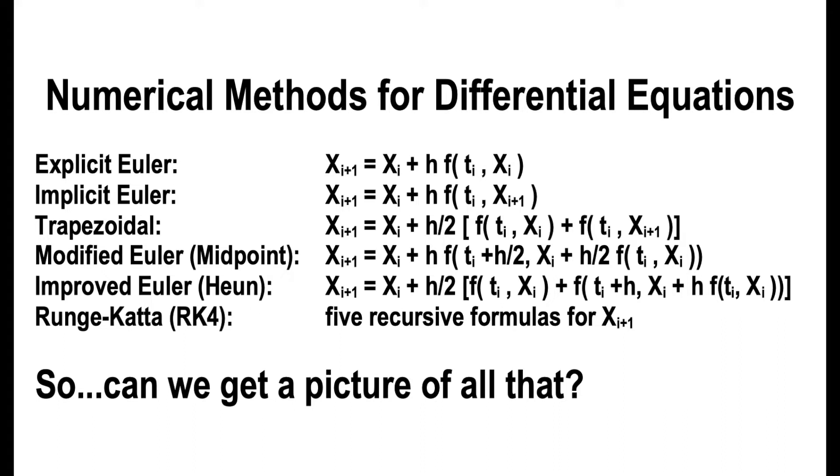There's explicit Euler, implicit Euler, trapezoidal, midpoint, and Heun's method, as well as Runge-Kutta, which I'll write out later.